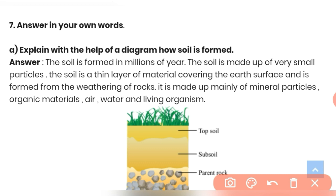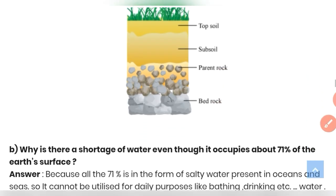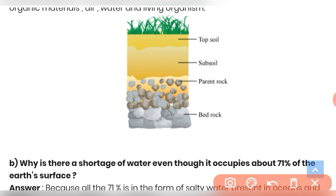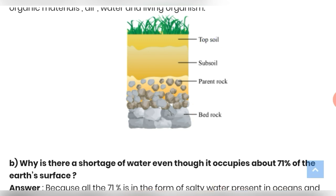Question 7 (a): Explain with the help of a diagram how soil is formed. Soil is formed over millions of years. It is the thin layer of mineral material covering the earth's surface, formed from the weathering of rocks. It is made up of mineral particles, organic materials, air, water, and living organisms. The diagram shows rock being gradually broken down into smaller particles and finally into soil.